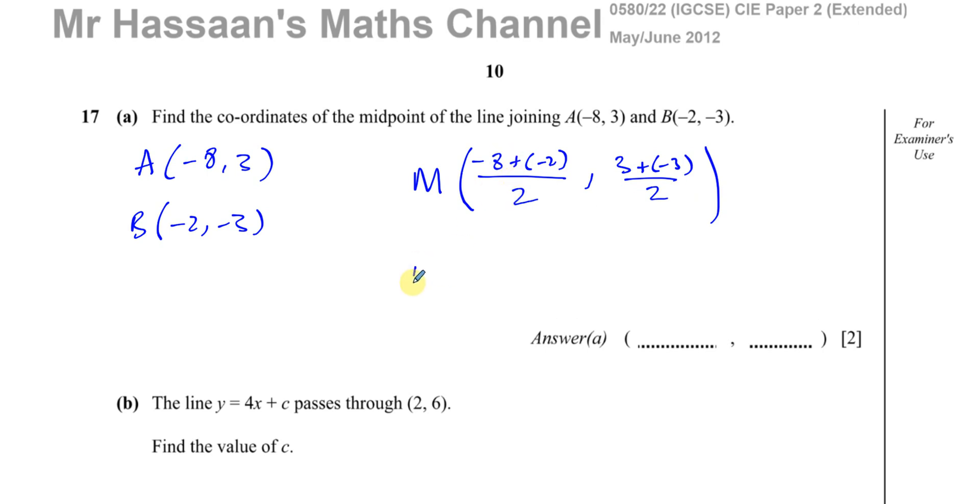So this gives you, that's -10 divided by 2 and that's 0 divided by 2. So you end up with (-5, 0). So that is the midpoint of these two points A and B.